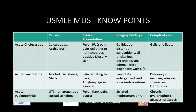For the USMLE must-know points: acute cholecystitis can be calculus (gallstone impacting the cystic duct) or acalculous (biliary stasis or infection without stones, typically in ICU patients). It presents with fever, right upper quadrant pain, possible shoulder pain, and a positive Murphy sign. Ultrasound is the imaging mainstay, showing gallbladder distension, wall thickening, and pericholecystic edema. A complication is gallstone ileus — a fistula between the gallbladder and bowel, where a stone impacts at the ileocecal valve, causing small bowel obstruction and pneumobilia.